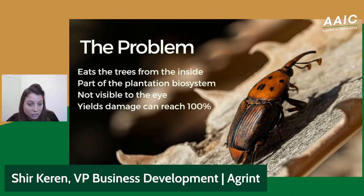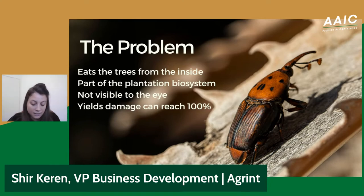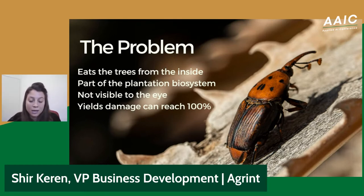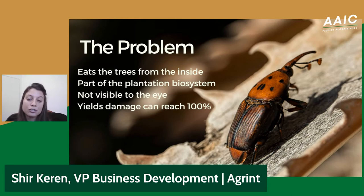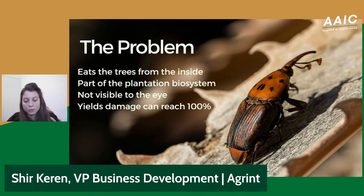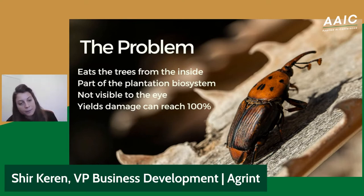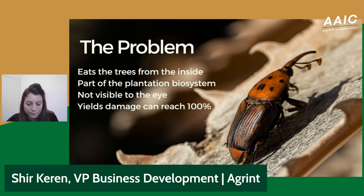If you want to treat it, you need very early information in order to actually save the tree. A tree is an investment — you plant a tree and have to wait at least four years for it to give fruit and yield. Once the damage has already been done, 100% of the yield will be damaged. We have a lot of knowledge in the borer pest area, and we're also going into fruit flies as well.